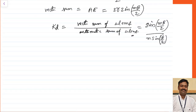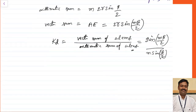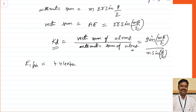This is called the distribution factor. The disadvantage of using distributed winding is that your EMF will not be equal to your normal EMF — it will be less. The EMF induced in distributed winding equals the EMF induced in concentrated winding multiplied by the distribution factor Kd. If I want to calculate E per phase, it is equal to 4.44·N_phase·Φ_max·f multiplied by the distribution factor.